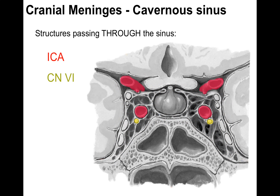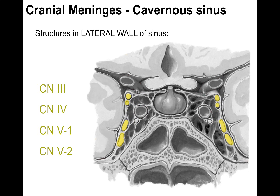The internal carotid artery (ICA) runs through the cavernous sinus — its cross-section appears as a circle in the middle, wrapping around the front and exiting near the optic chiasm. Right below the ICA is cranial nerve VI, the abducens nerve. In the wall of the cavernous sinus, from top to bottom, are cranial nerve III (oculomotor), cranial nerve IV (trochlear), cranial nerve V1 (ophthalmic division of trigeminal), and cranial nerve V2 (maxillary division of trigeminal).